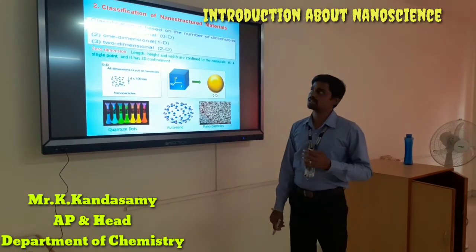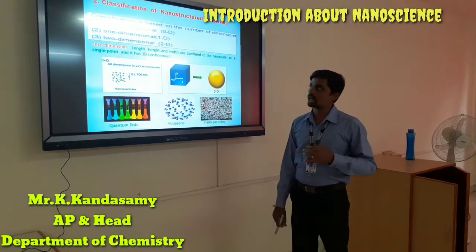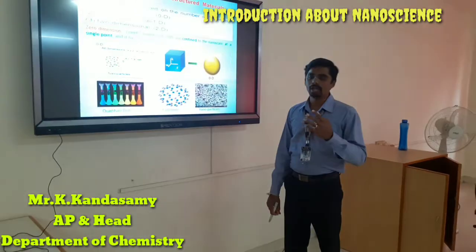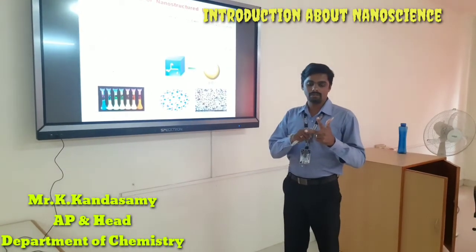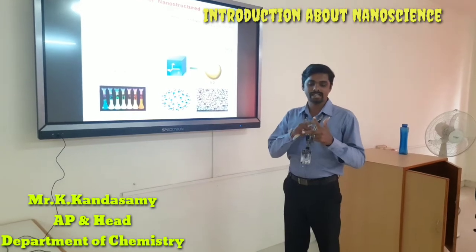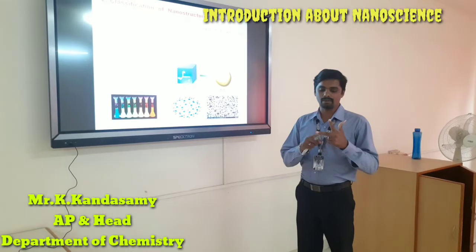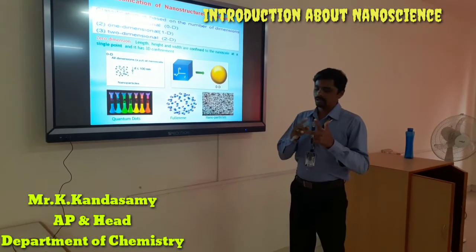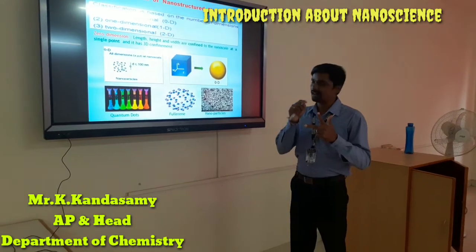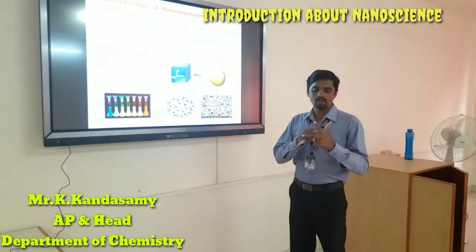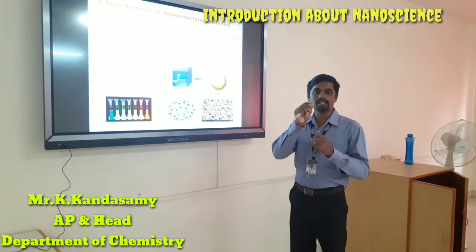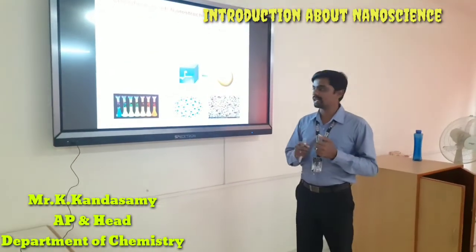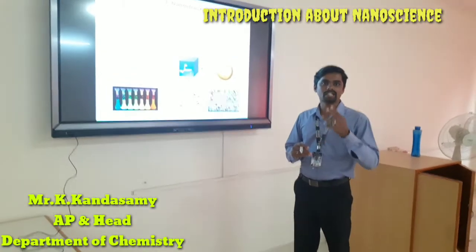We have a lot of dimensional variations in nanomaterials. We have zero-dimensional, one-dimensional, as well as three-dimensional nanomaterials. What is zero-dimensional? We have length, width, and height — these cover the three dimensions: x, y, z, which we call the three-dimensional spectrum. In zero-dimensional, all three dimensions are confined to the nanoscale at a single point — all dimensions are confined, so we call it zero-dimensional. Examples include quantum dot materials, nanoparticles, and fullerene materials.